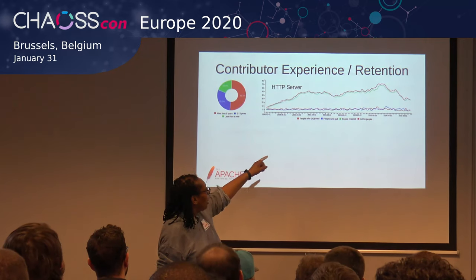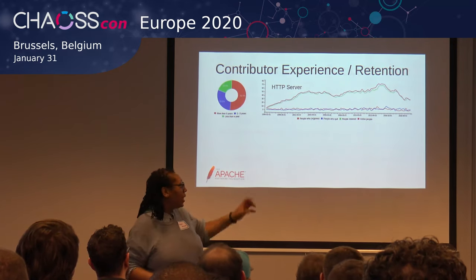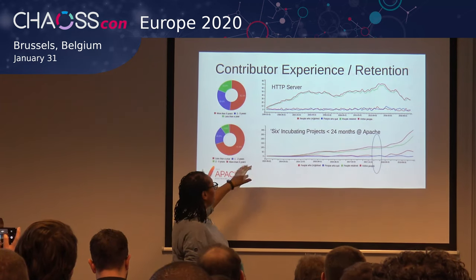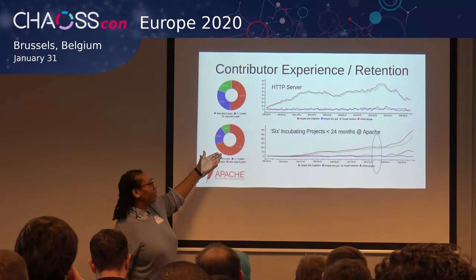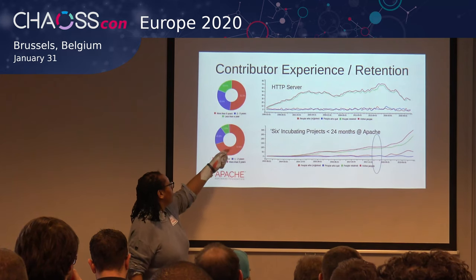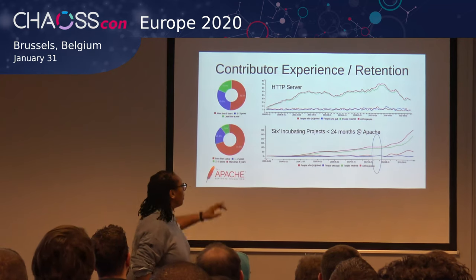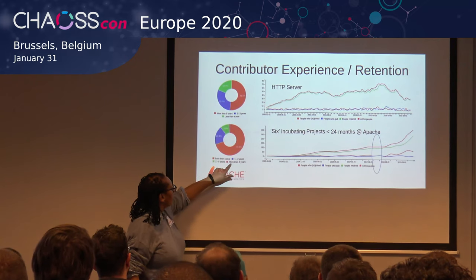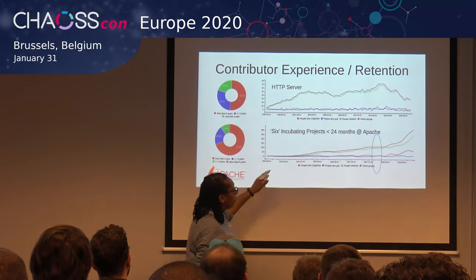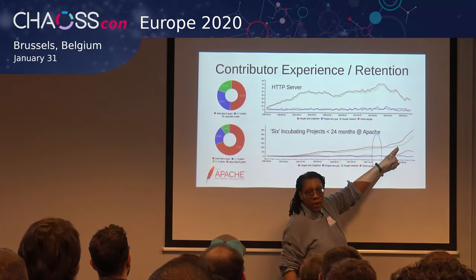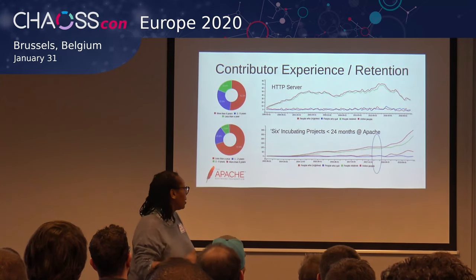Comparing that to the incubating projects — and you'd expect this for a new project — the bulk of people have been there for less than a year, and the lowest number have been there for more than five years. But you can see a nice flow through the contributor bands: less than a year, one to two years, two to five years, more than five years. And over time, the number of active people is going up — which is what you want. Is this an indication that the community is welcoming and happily accepts new contributors?